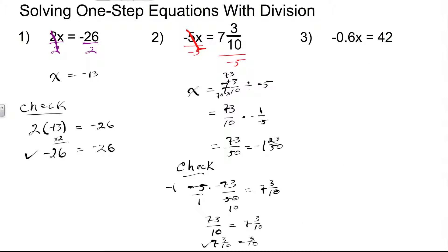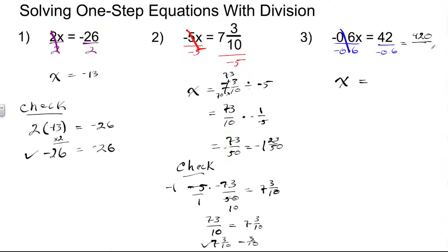In our last problem, problem number 3, the only real difference from problem 1 is that we have a decimal: negative 6 tenths x is equal to 42. To solve this equation, since it's multiplication, we're going to divide each side using the division property of equality by negative 0.6. On the left-hand side, the negative 0.6 divides out, leaving x. On the right-hand side, we divide 42 by negative 0.6. Since division by a decimal isn't allowed, we multiply both numbers by 10: 420 divided by negative 6 is negative 70.